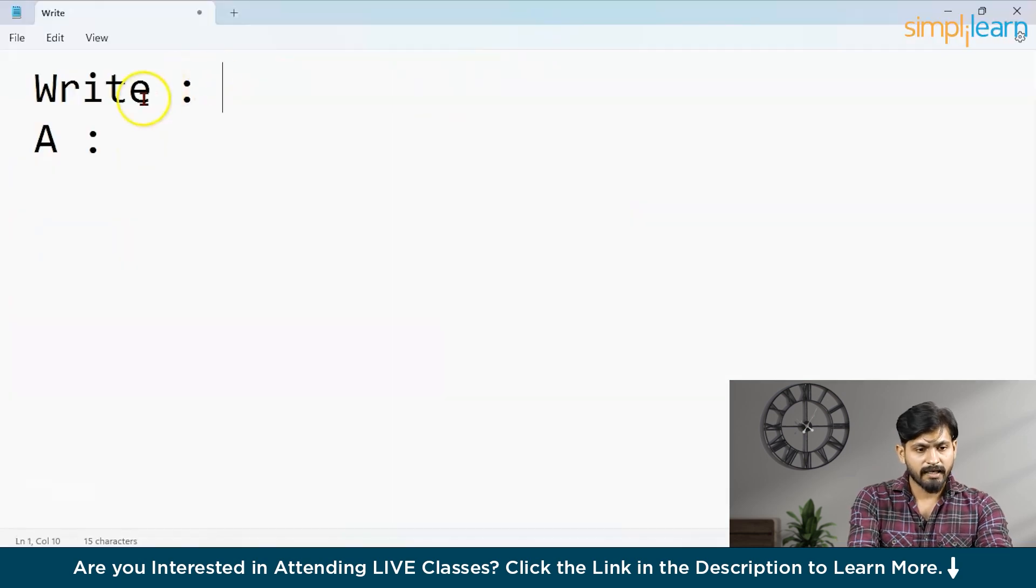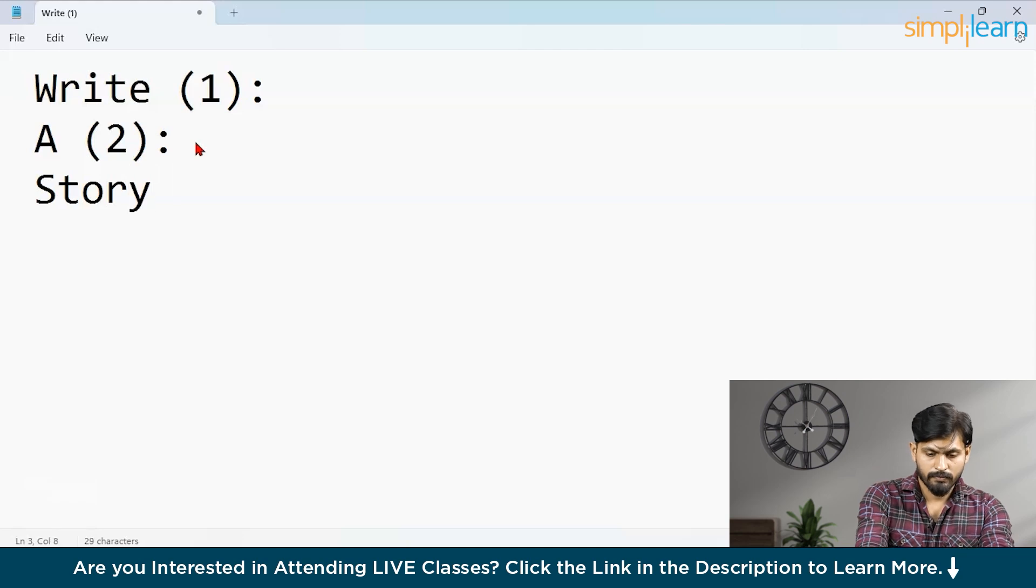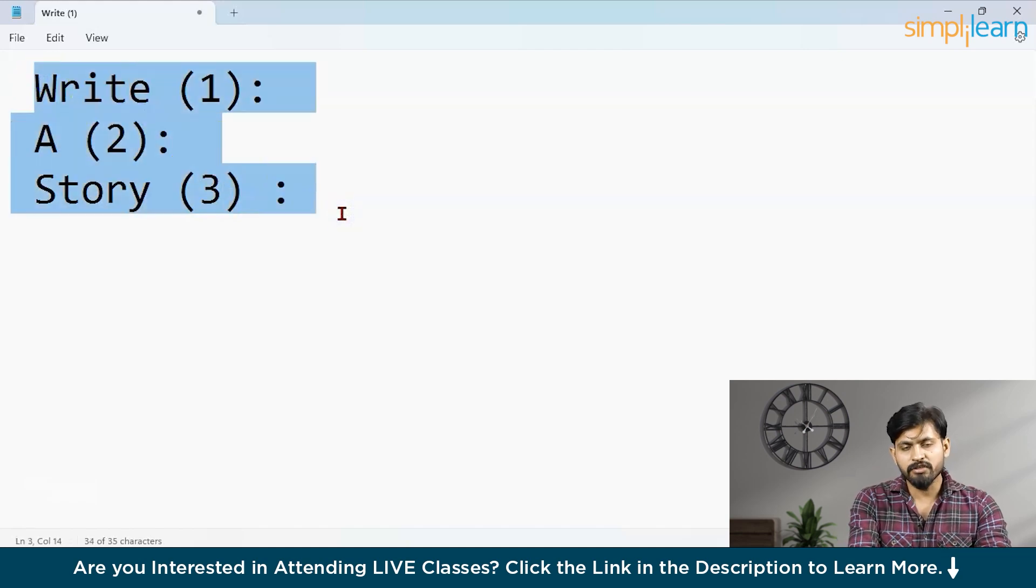Let me show you what I meant. Suppose write has given the positional encoding of say 1. A has something called 2 and story has a positional encoding of 3. Write a story. Now, in this way, like if the words are also rearranged, the resulting vectors will be different ensuring that each sentence is represented uniquely. This is how we tackle that problem. Positional encoding is a solution.